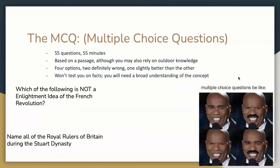The first part of the AP Euro exam is the MCQ — Multiple Choice Questions. It's 55 questions in 55 minutes, so essentially one question per minute. You might think that sounds manageable since it's multiple choice, but the questions are passage-based. They'll give you a small excerpt — maybe one or two paragraphs from a document — and then ask about four questions on it, so you also have to factor in reading time.